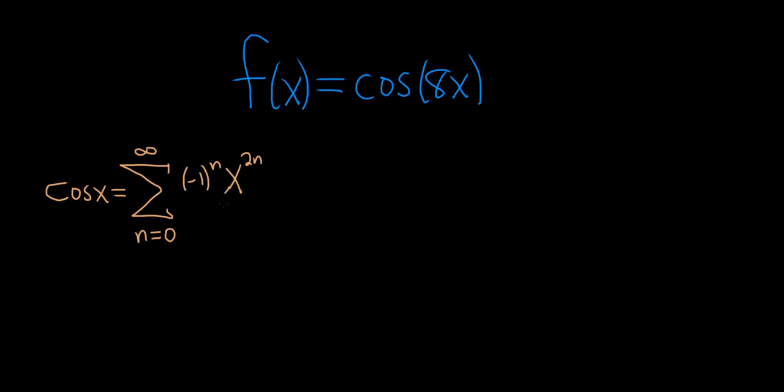And on the bottom, we have 2n factorial. So easy way to memorize the Maclaurin series for cosine is just remember that cosine is an even function and 2n is even, so it's always going to have this form.